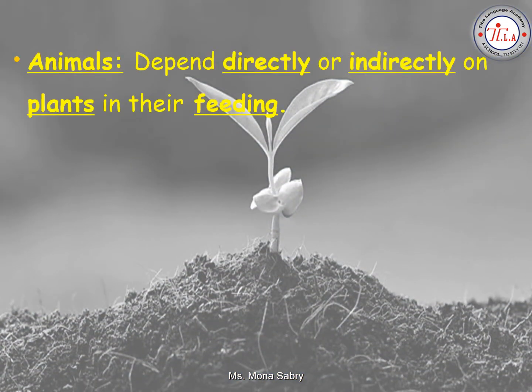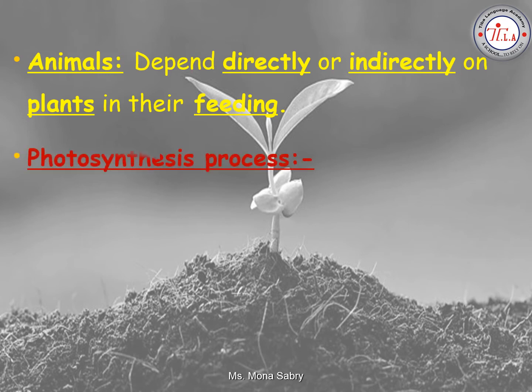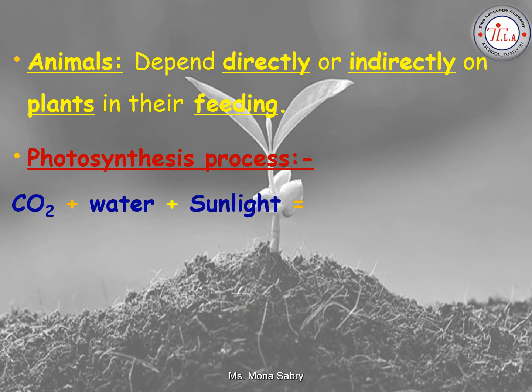Animals depend directly or indirectly on plants in their feeding. During the photosynthesis process, plants absorb carbon dioxide, water, and sunlight to produce starch and oxygen gas.